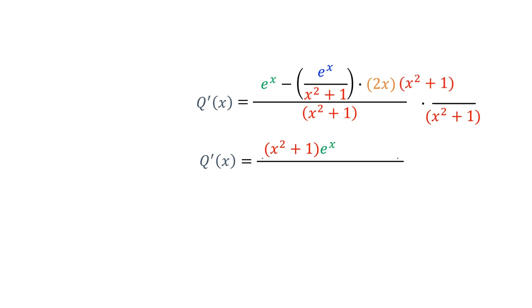And when we multiply x squared plus 1 by the second term, it cancels with the x squared plus 1 in the denominator. So we get e to the x times 2x. Then when we multiply the denominators to get x squared plus 1 all squared.